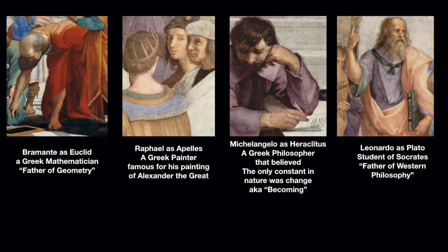Raphael is followed by Michelangelo, shown as Heraclitus — a philosopher who believed the only constant was change and emphasized the potential in everything. This is perfect for Michelangelo, because he was known to look at a hunk of marble and think about how he could free figures from it. He could see the potential in a giant chunk of marble and see what figures were inside, and it was his job to free them.